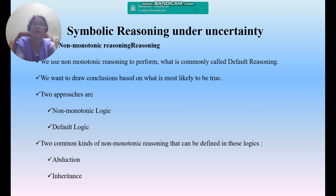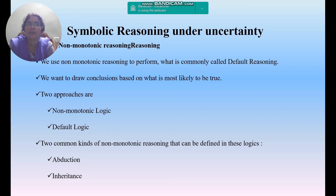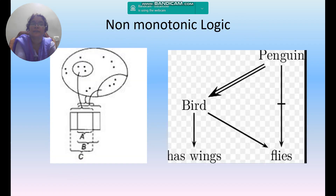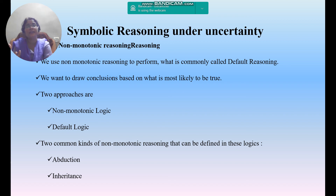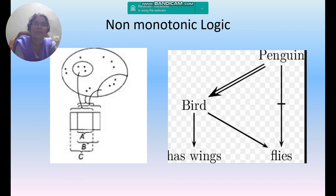When we use non-monotonic reasoning, we commonly call it default reasoning — drawing conclusions based on what is most likely to be true. Non-monotonic reasoning can also appear in the form of default logic. Two common kinds of non-monotonic reasoning are abduction and inheritance. The two approaches for non-monotonic reasoning are non-monotonic logic and default logic. Symbolic reasoning under uncertainty is essentially non-monotonic reasoning, handling rules that contain incomplete, inconsistent, and inadequate information.